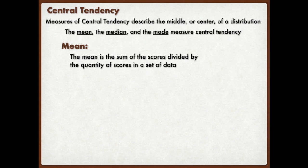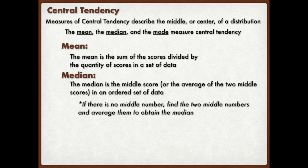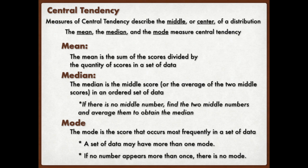The mean. The mean is the sum of the scores divided by the quantity, or how many, of the scores in the set of data. So we find the total, the sum, and then we divide that by how many. Then we have the median. The median is the middle score, or the average of the two middle scores. In order, now if there's no middle number, find the two middle numbers, and then average them to obtain the median. Now the mode, how frequent, remember how many times, and this is which one occurs most frequently, occurs the most, that would be the mode.